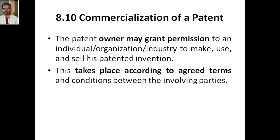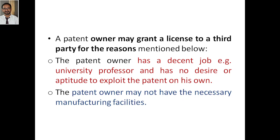This takes place according to the agreed terms and conditions between the involving parties, whoever you are selling it to. A patent owner may grant a license to a third party for many reasons. The first reason: the patent owner has a decent job — imagine he is a university professor or something like that — and has no desire or aptitude to exploit the patent on his own. He has a passion towards teaching, so he just makes patents and will sell or license them to someone to make, use, or sell it.